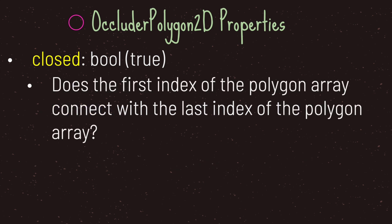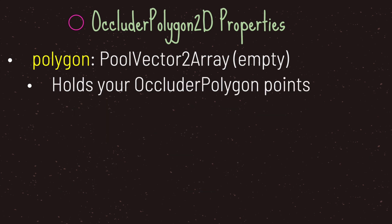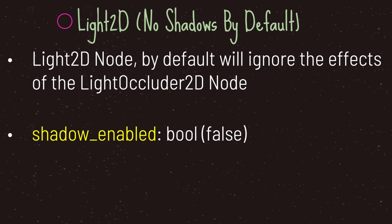The closed property being set to true means that the first index of the polygon array connects with the last index of the polygon array. The cull mode, which defaults to zero, comes with three options: disabled, clockwise, and counterclockwise — either culling is disabled, culling is performed in the clockwise direction, or culling is performed in the counterclockwise direction. The polygon property holds your occluder polygon points, which are ultimately used when creating or casting your shadow.